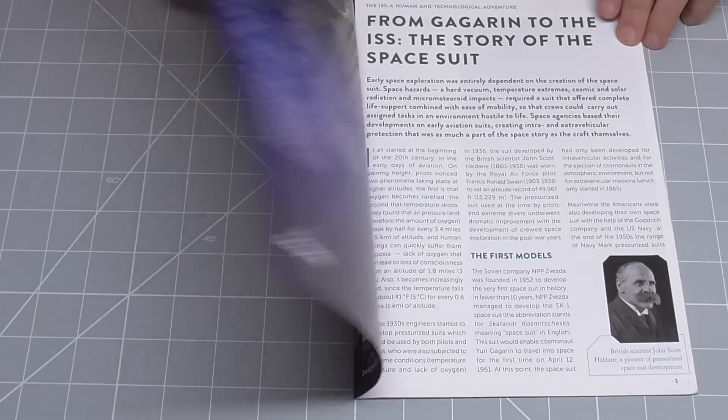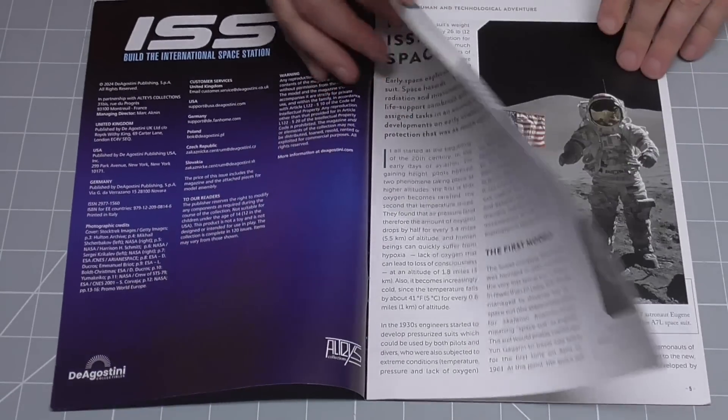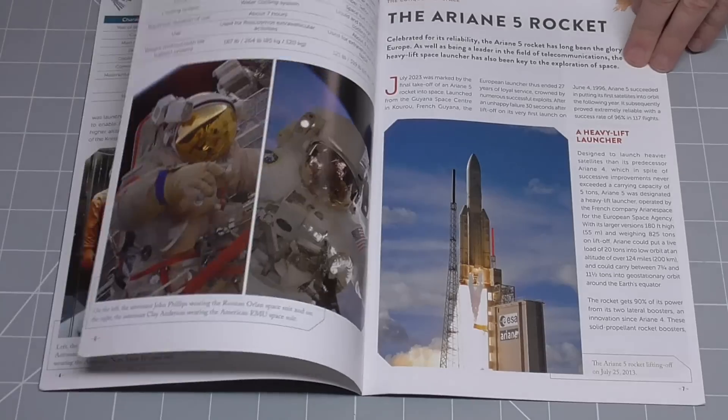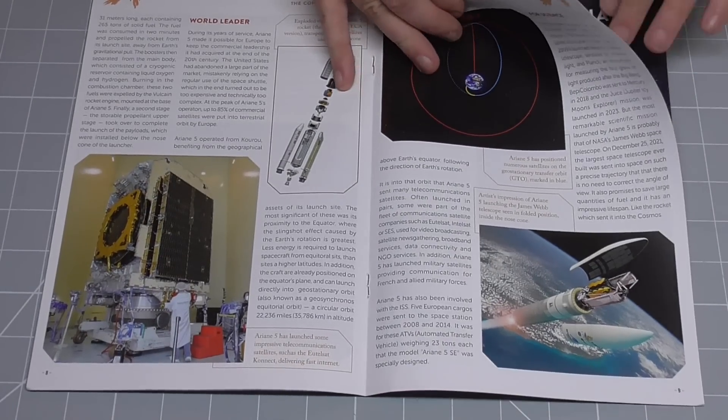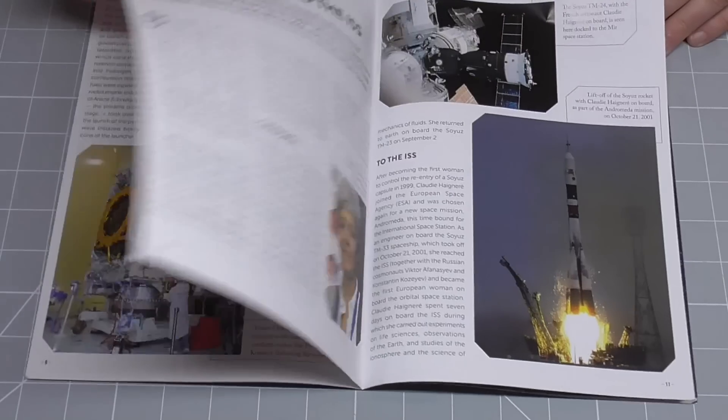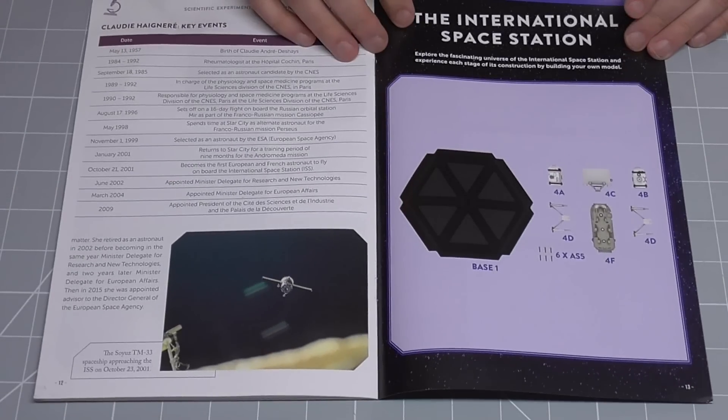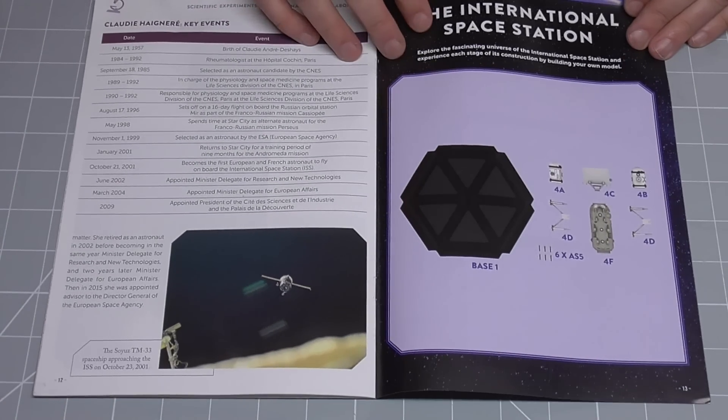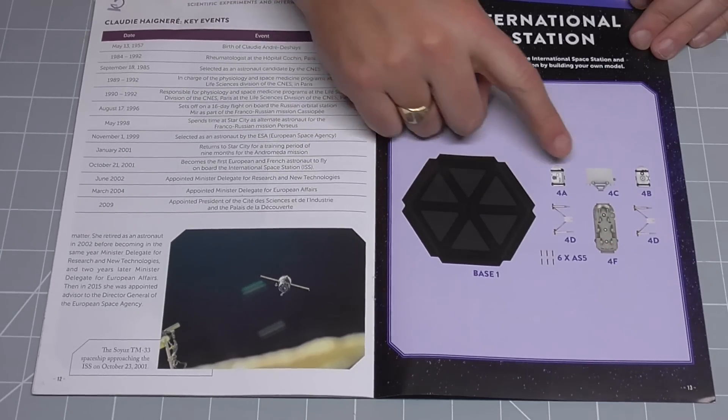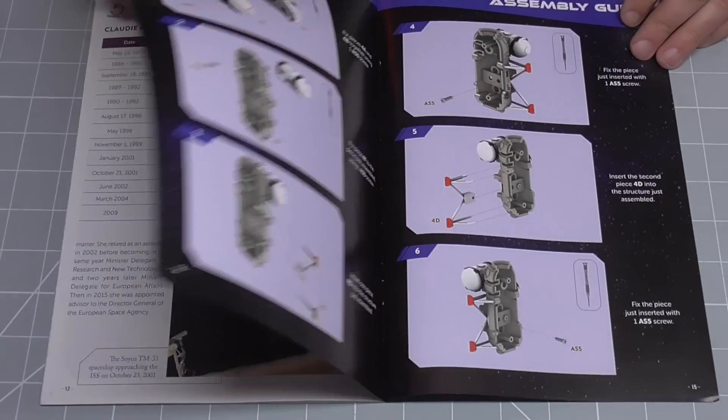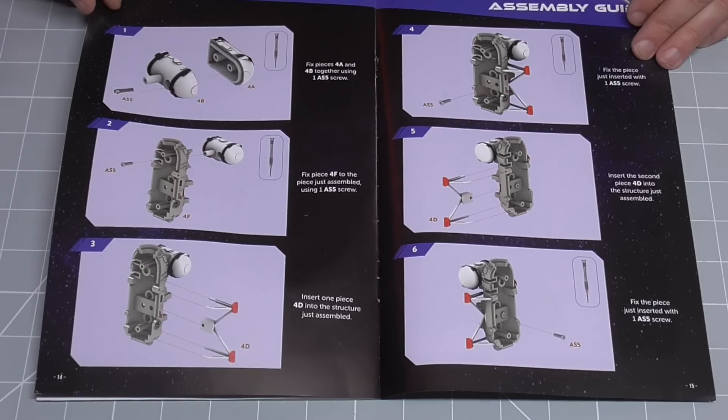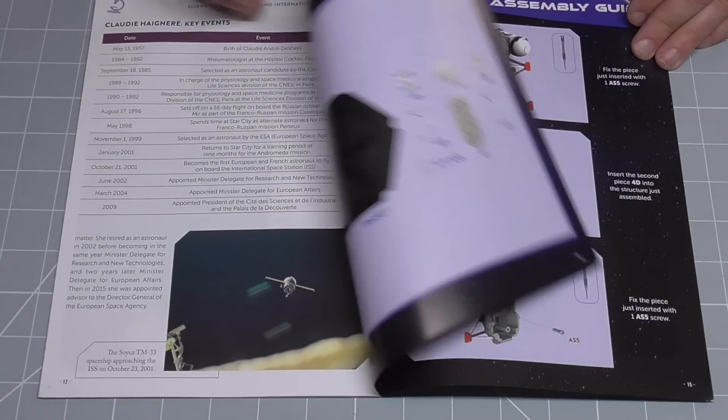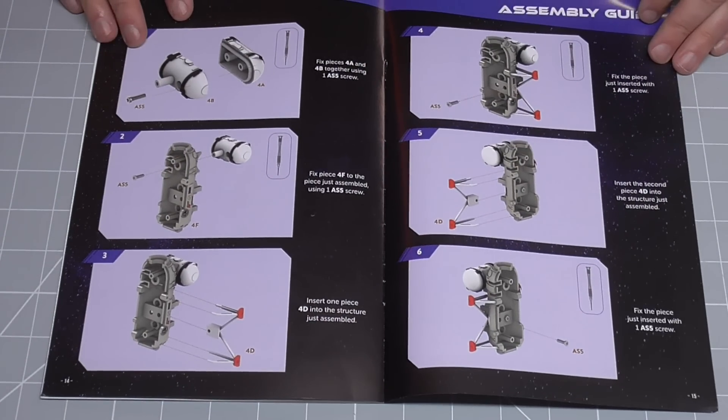So in the final stage, stage five of this pack. Let's have a look at the magazine. We are going to be doing. Explore the fascinating universe. The International Space Station. It doesn't actually tell us. It looks like we've got a base here. And we're building something here as well. It's not actually telling us what some of these parts are. So, oh well, we'll just go by calling them details.